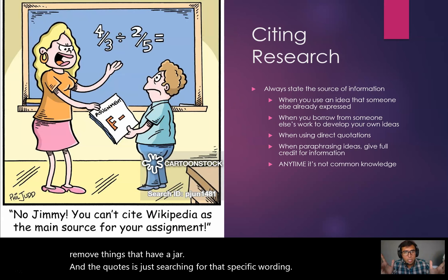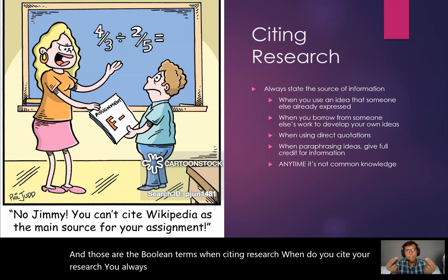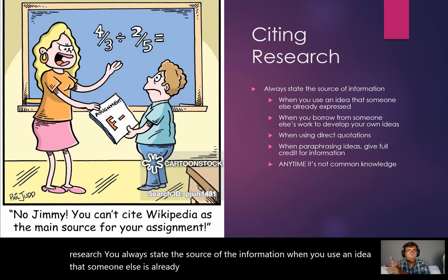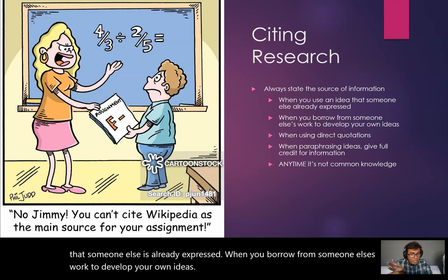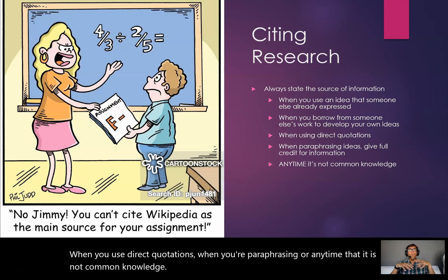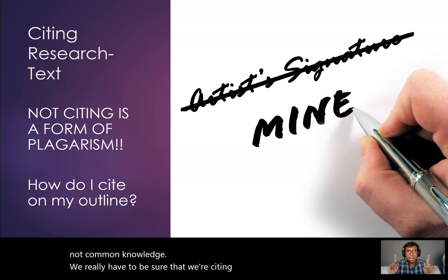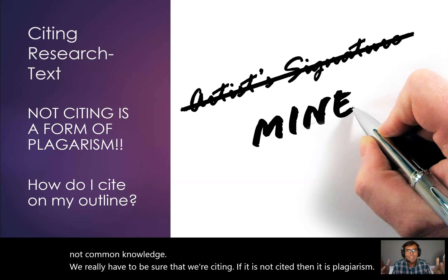When citing research, when do you cite? You always state the source of the information: when you use an idea someone else has already expressed, when you borrow from someone else's work to develop your own ideas, when you use direct quotations, when you're paraphrasing, or any time it is not common knowledge. We have to be sure we're citing. If it is not cited, then it is plagiarism — and plagiarism is bad.